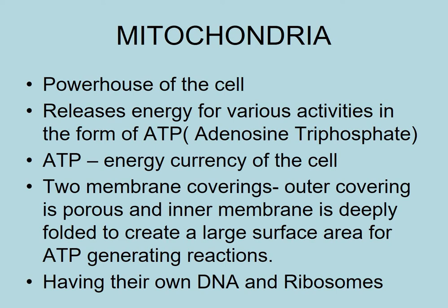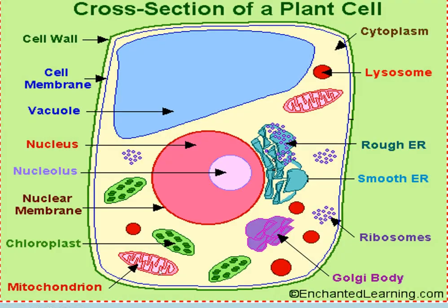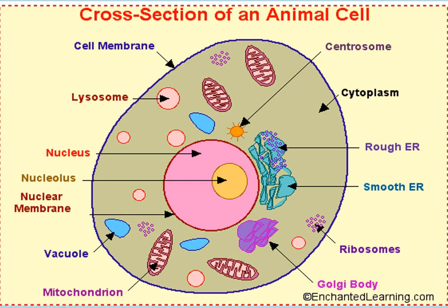Mitochondria have their own DNA and ribosomes. Here you can see mitochondria in plant cell. Here you can see mitochondria in animal cell.